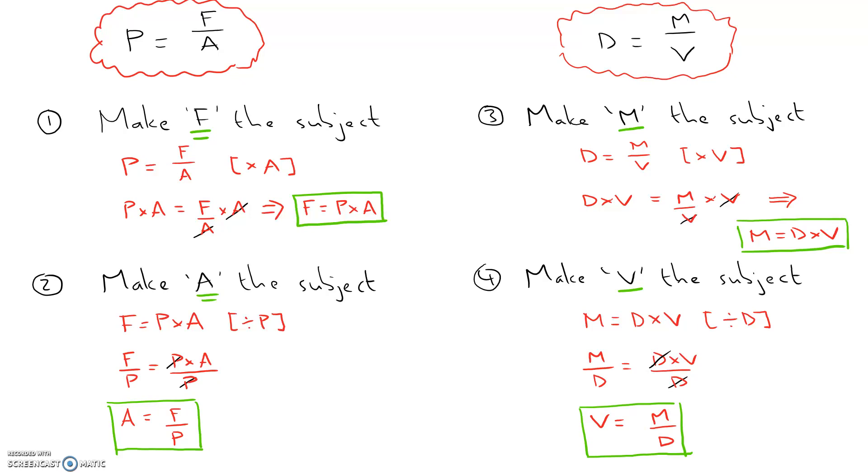Okay, so how did you do? You should have got, number 1, force equals pressure times area. Number 2, area equals force divided by pressure. Number 3, mass equals density times volume. And number 4, volume equals mass divided by density. If you got those right, fantastic, well done.